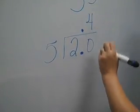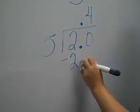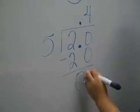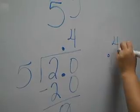5 goes into 20 4 times, subtract 20, that leaves us with 0. So we have 0.4.